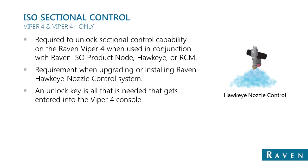On the ISO side with the Viper 4 console only, sectional control — not called AccuBoom — is also available. An unlock is required in the task controller. This is useful for guys running the Hawkeye nozzle control, which requires the ISO sectional unlock. Also, if running any Raven ISO product control node or the new Raven RCM, you can unlock section control capability with just an unlock into the Viper 4 console.